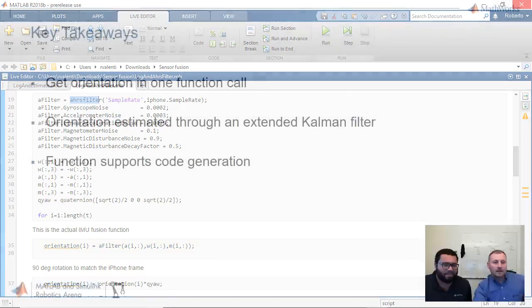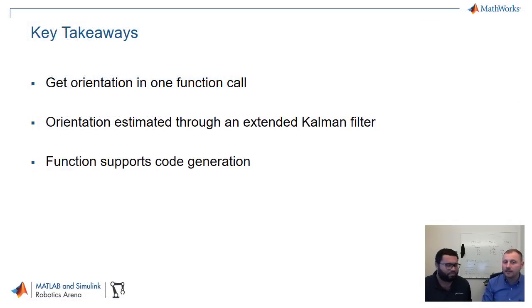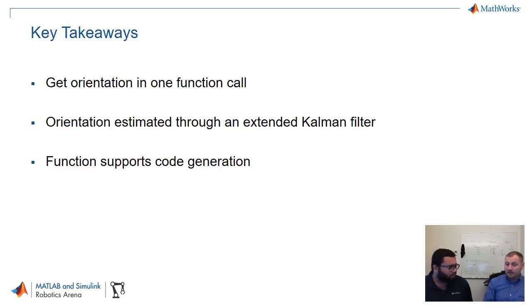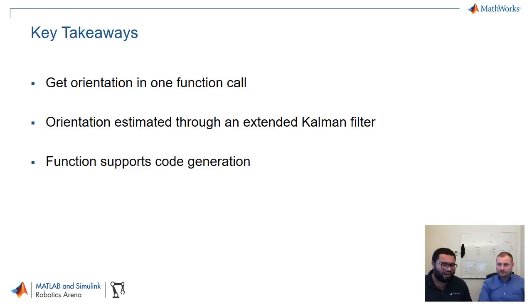Let's go back to the slides for some takeaways. We can get an orientation estimation in just one function call — you define the filter and call it with the inputs. The orientation is estimated through an indirect quaternion-based extended Kalman filter. A great feature is that it supports function and code generation, so we can just click a button and get a C++ version of it. There's also a training course on generating C and C++ code from MATLAB and Simulink — about four or five hours of material you can go through at your own pace, with downloadable files.